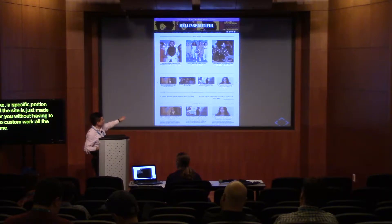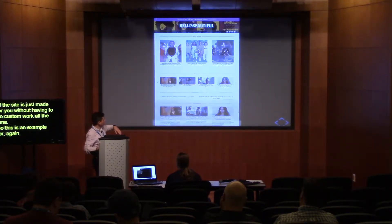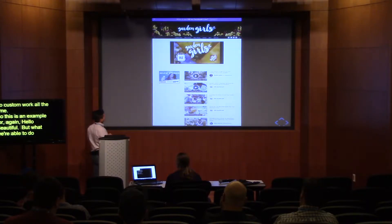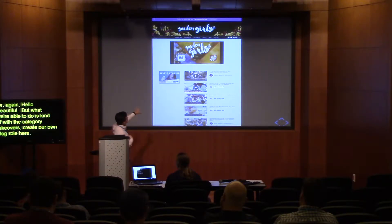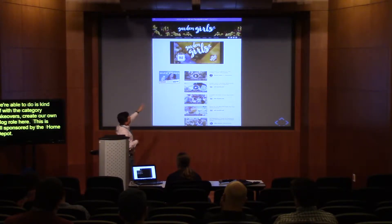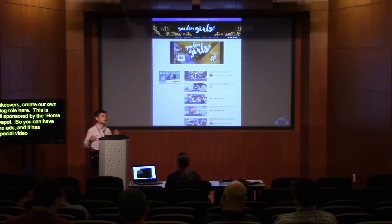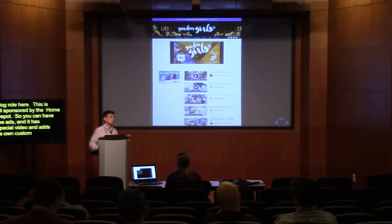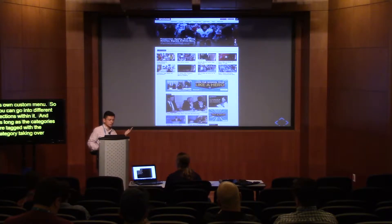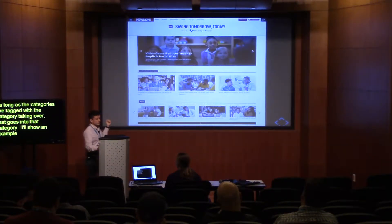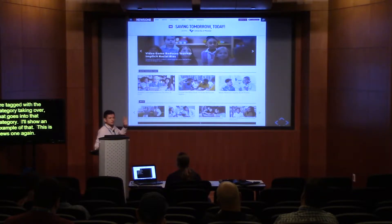This is an example for Hello Beautiful. With category takeovers, we can create our own blog role — this one is all sponsored by Home Depot. They can have any kind of ad files they like, a special video, and a custom menu so you can go into different sections. As long as the categories are tagged with the category being taken over, that styling goes into that category. Here's News One — we did this for the University of Phoenix. This is another example of branded content that we're able to do within WordPress.